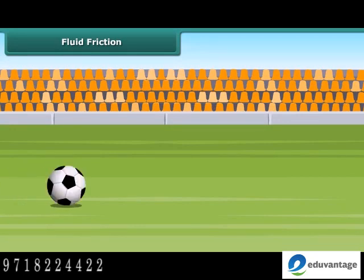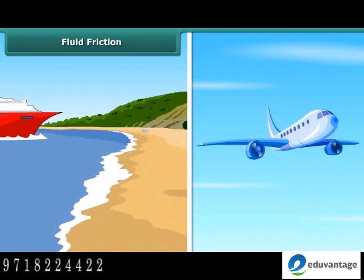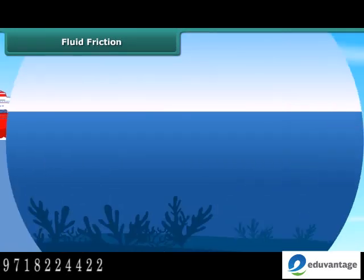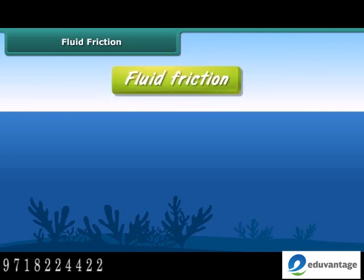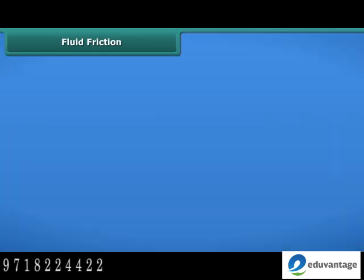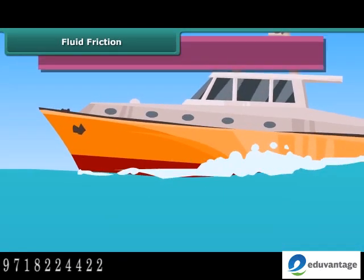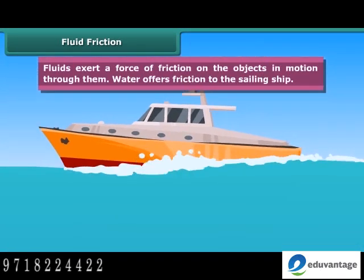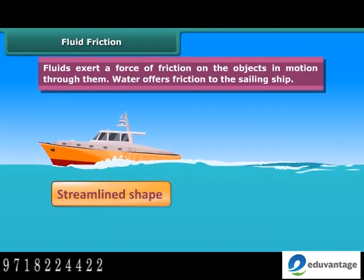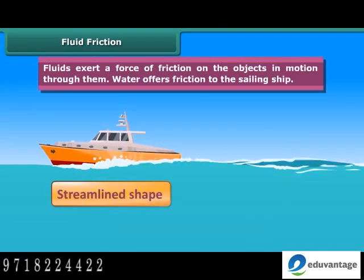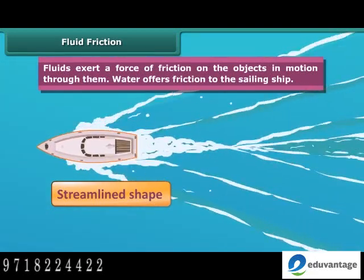It is not only the ground that offers force of friction on a body moving along its surface — water and air also exert frictional force. In science, the common name for gases and liquids is fluids. The streamlined shape of fish helps them reduce the force of friction between their body and the water through which they move. Boats and ships are narrow in front and sloping on the sides — this is known as a streamlined shape, which reduces friction from the fluid medium.